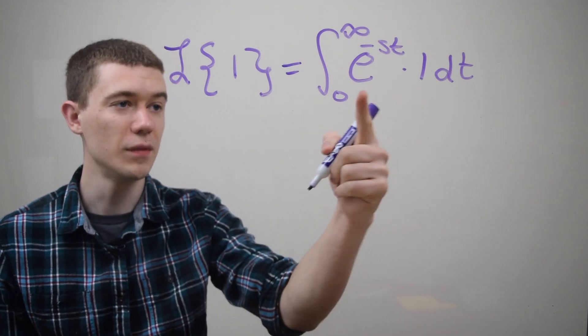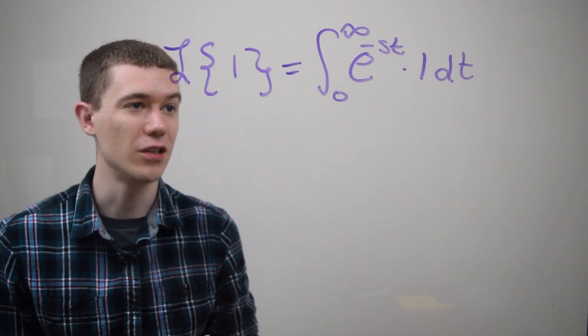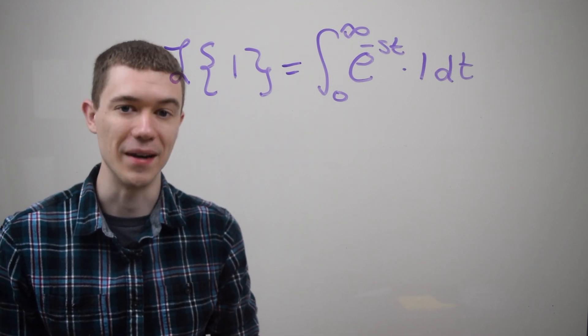Okay, well multiplying by 1 doesn't really do anything, that doesn't really affect this integral too much, so really I just have to integrate e to the minus st.